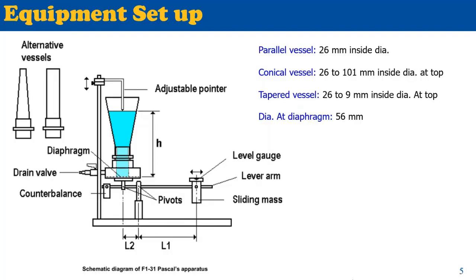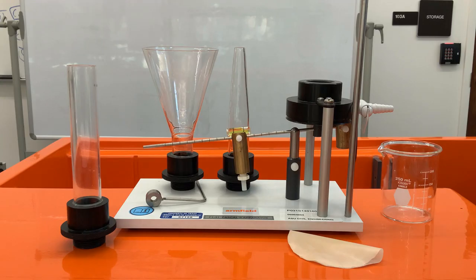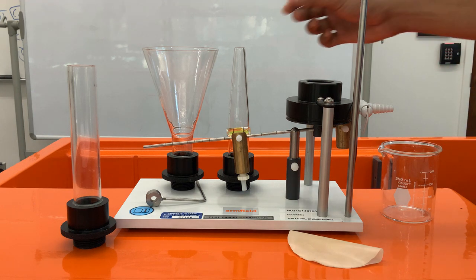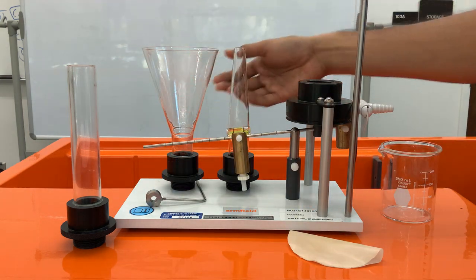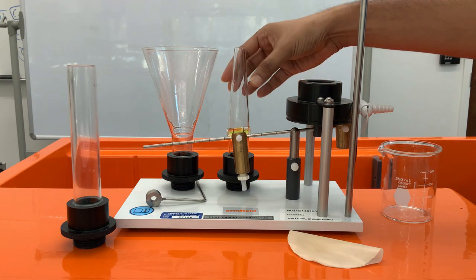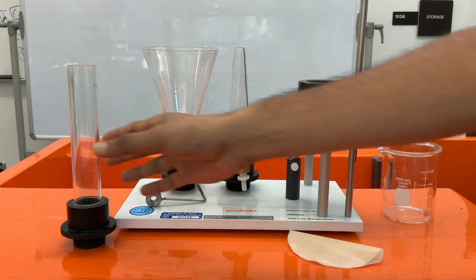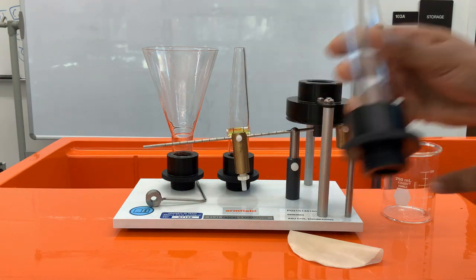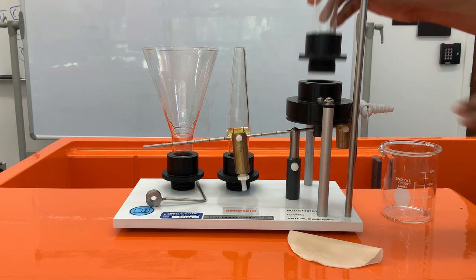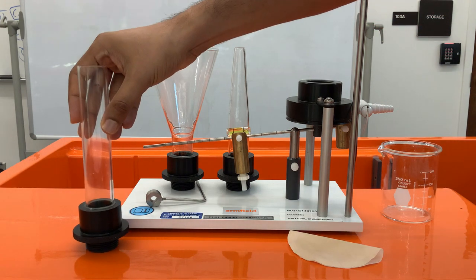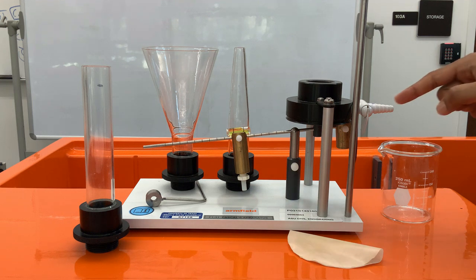The dimensions are given on the right side of the slide. Let us introduce ourselves with our setup. In our Pascal apparatus, we have three alternative vessels: one is parallel, one is conical shape, and one is tapered inward. Each of them is mounted with a screw so we can mount each of them on top of this setup here.